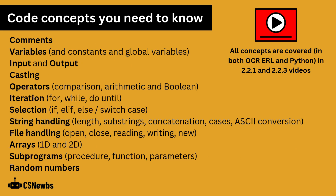Here is a list taken from Section 3C of the specification document of all the code concepts you must be able to understand and write code for, potentially in the exam. I recommend to my students that they answer all programming questions in Python, as that's the language I've taught them, unless a question clearly asks for an alternative method such as a flowchart. All of these concepts are covered in both OCR exam reference language and Python in the videos in the 2.2.1 and 2.2.3 sections.